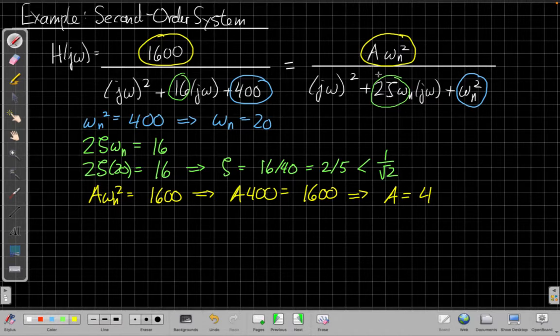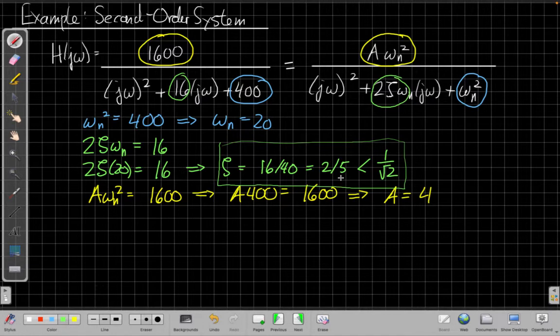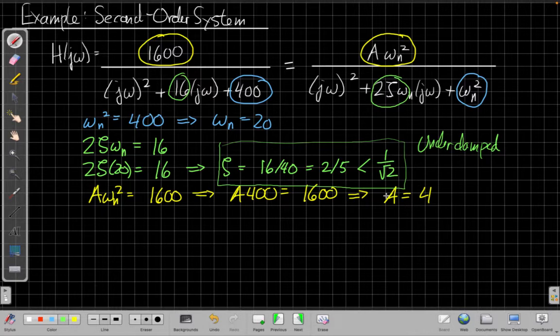So I can think of this as 4 times a standard form one like I analyzed last time. So this will just add a little additional gain in dB. The other important thing to note here is that because ζ is less than 1, 2/5 is 0.4, this tells me the system is underdamped. So the impulse response will oscillate back and forth, and the frequency response will have a peak in it around ωn. Okay, so these are my important pieces.